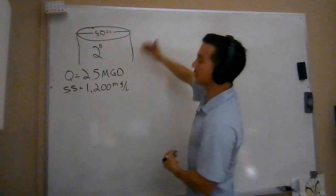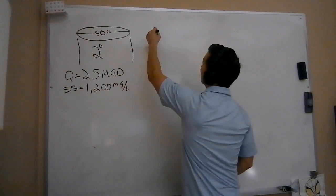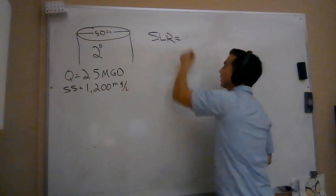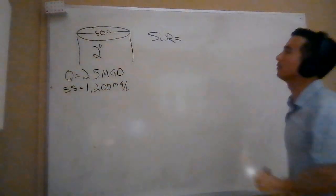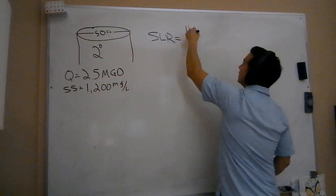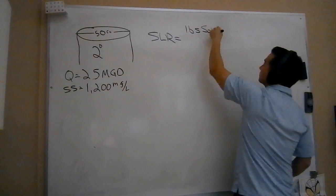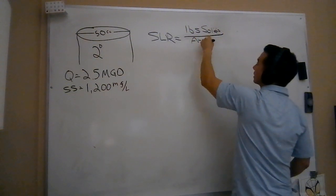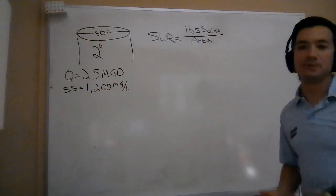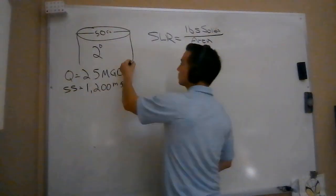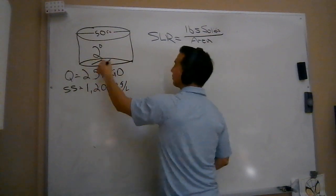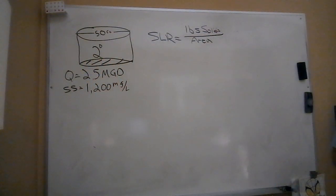My solids loading rate, or SLR - you've got to go to your wastewater formula sheet. That is my pounds of solids divided by the area of my clarifier, right? The area available to settle those solids out. If you picture the bottom of this clarifier, that's what we're dividing by - we're dividing by this area right here.